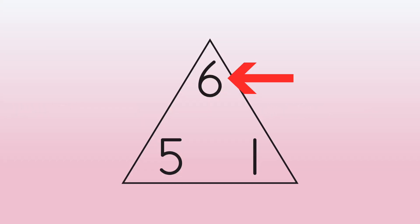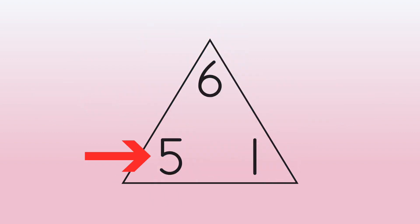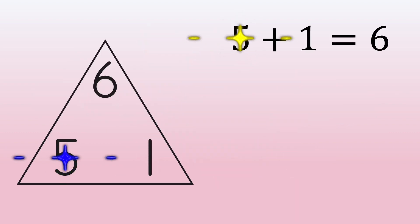Remember, the number of the greatest value goes to the top. Let's do addition first. Start at the bottom. Go over and up. 5 plus 1 equals 6.